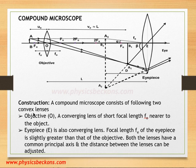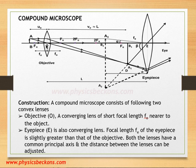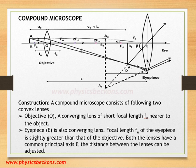As far as the construction is concerned, the compound microscope consists of two convex lenses. The objective O is a convex lens of short focal length FO; it is nearer to the object. The other lens, the eyepiece, is also a convex lens with focal length FE, which is slightly larger than that of the objective. In fact, both the objective and the eyepiece should have short focal lengths, because shorter focal length favors larger magnification.